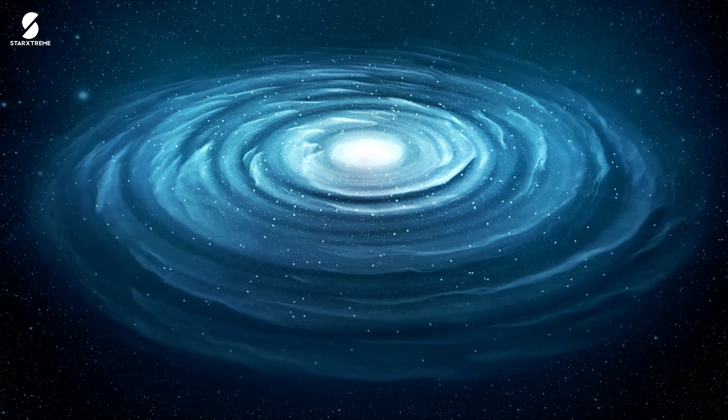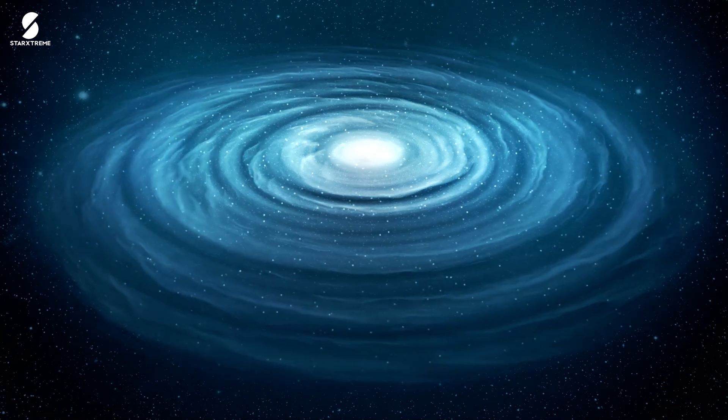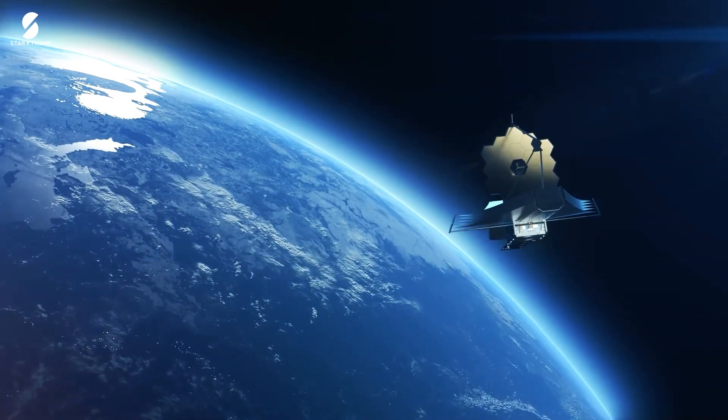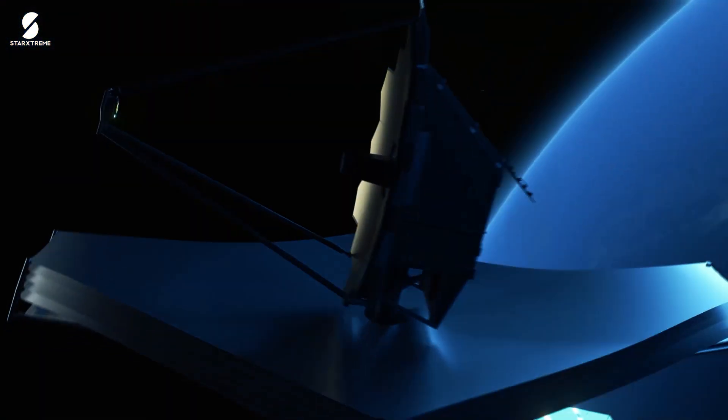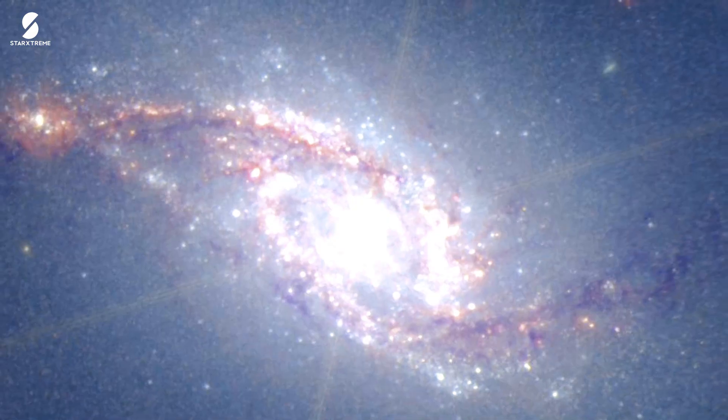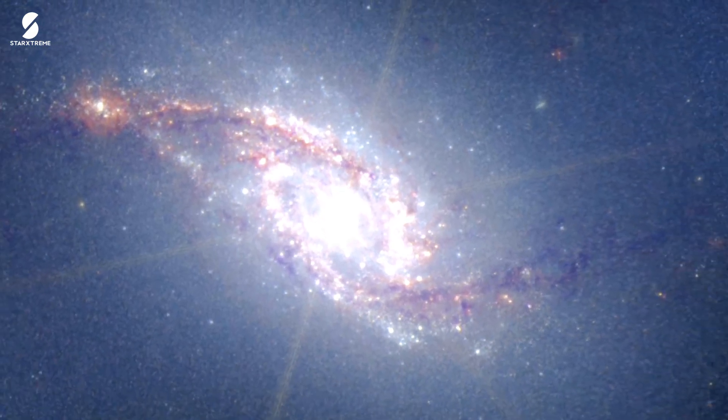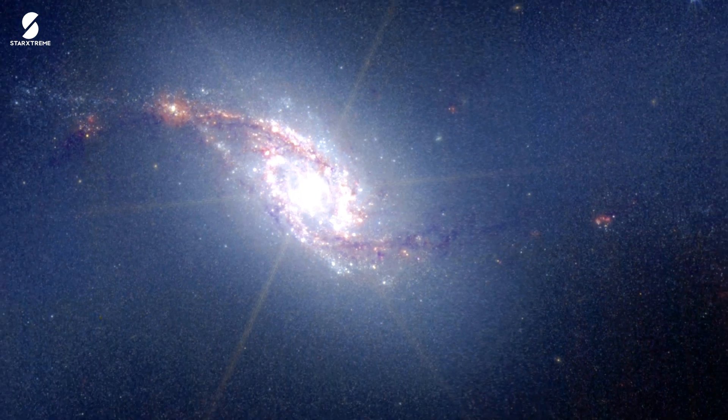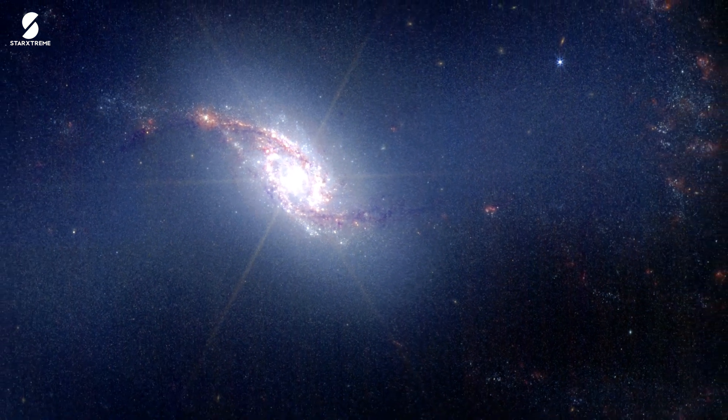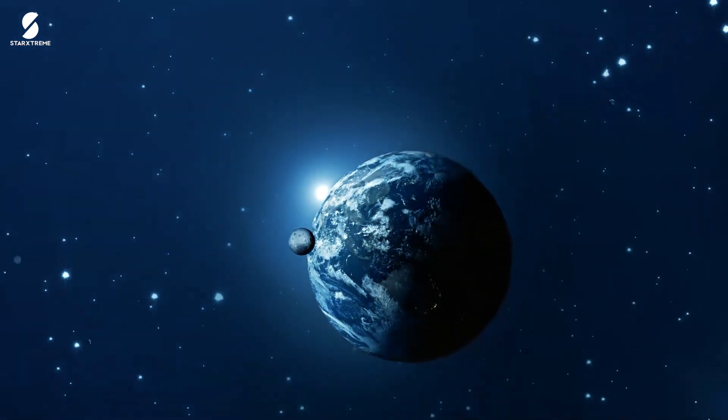Researchers using the James Webb Space Telescope have taken an extraordinary picture of a strange galaxy. This galaxy, called NGC 1365 or the Great Barred Spiral Galaxy, has one of the highest star formation rates of any galaxy we've ever seen, at around 60 million light-years from Earth.